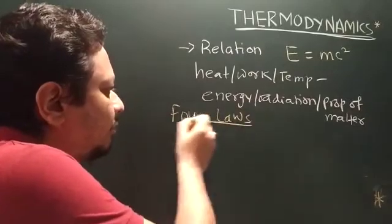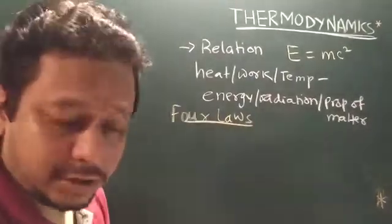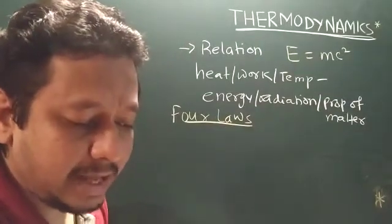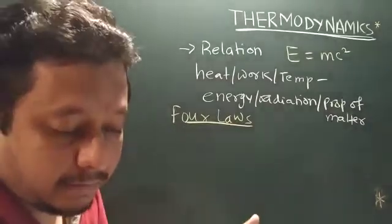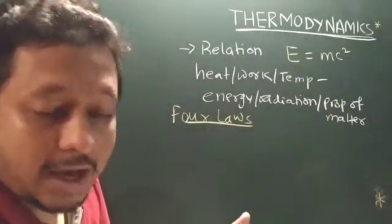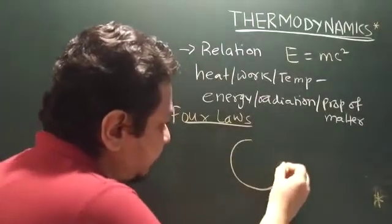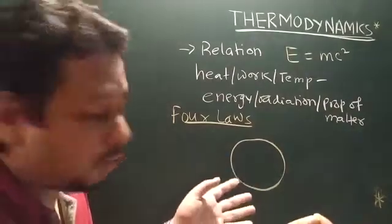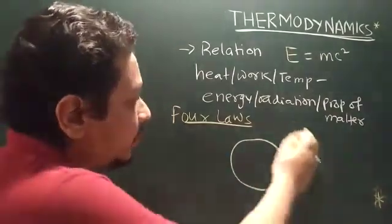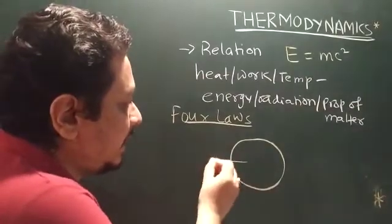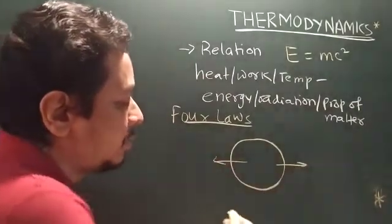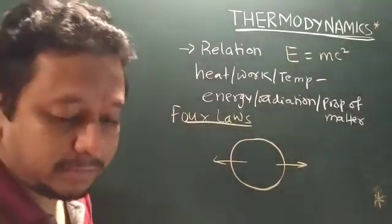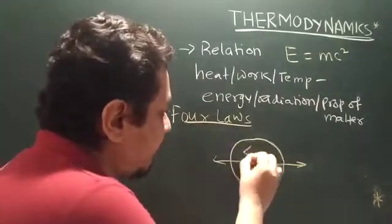There are four laws of thermodynamics. The first law specifies that energy can be exchanged between physical systems as heat and work. If you have a system — which can be isolated, closed, or open — and a surrounding, there can be an exchange of heat between them. That is the first concept of the first law.